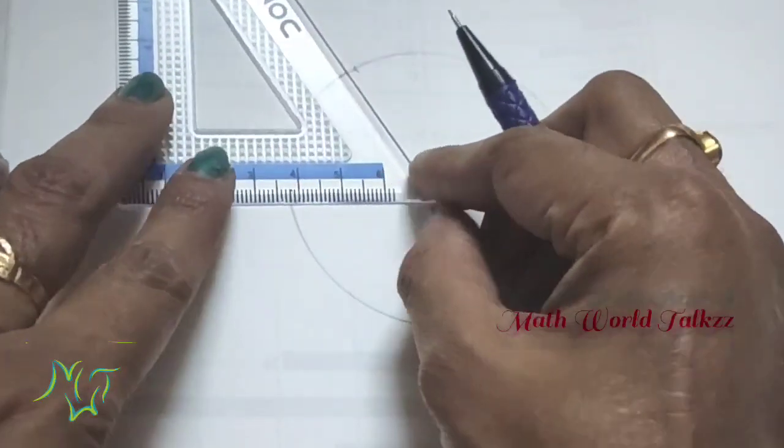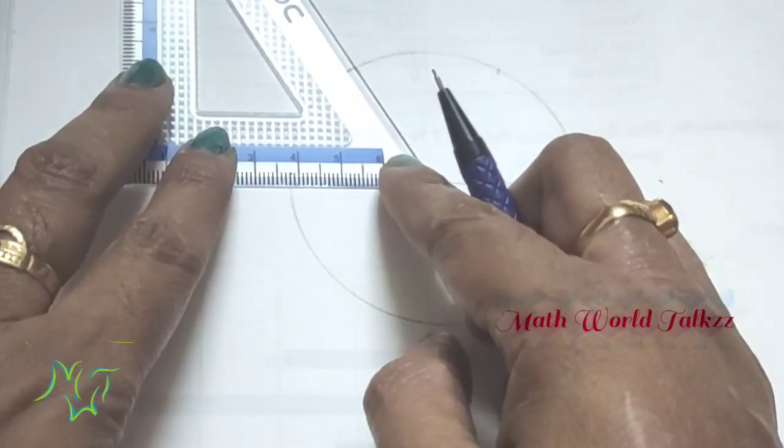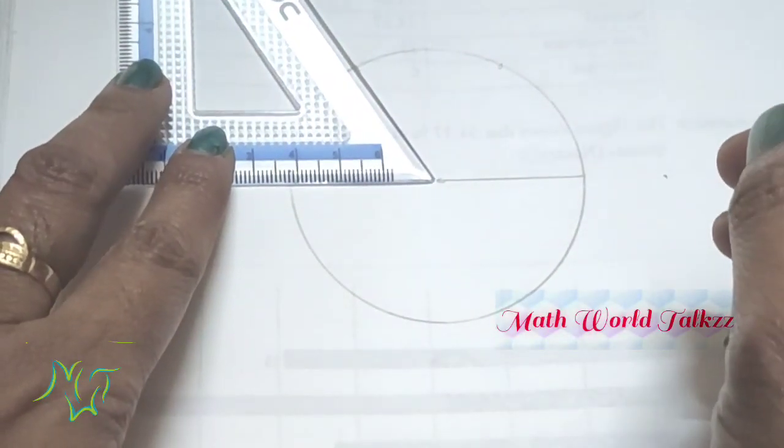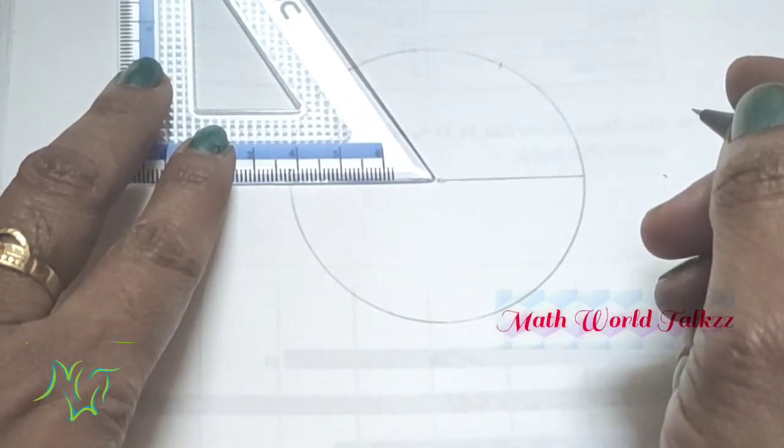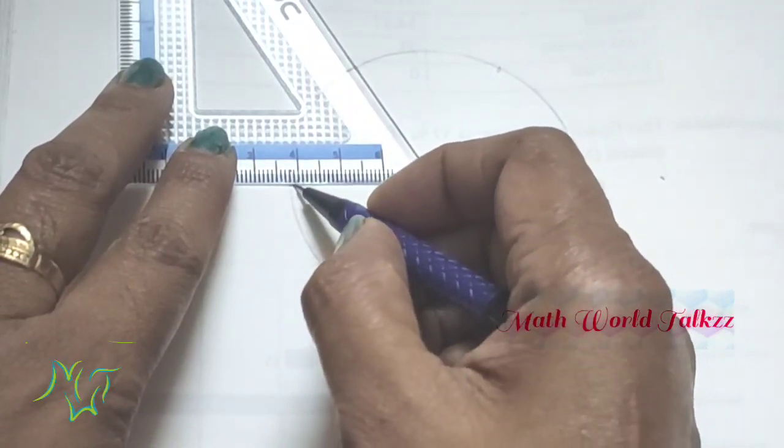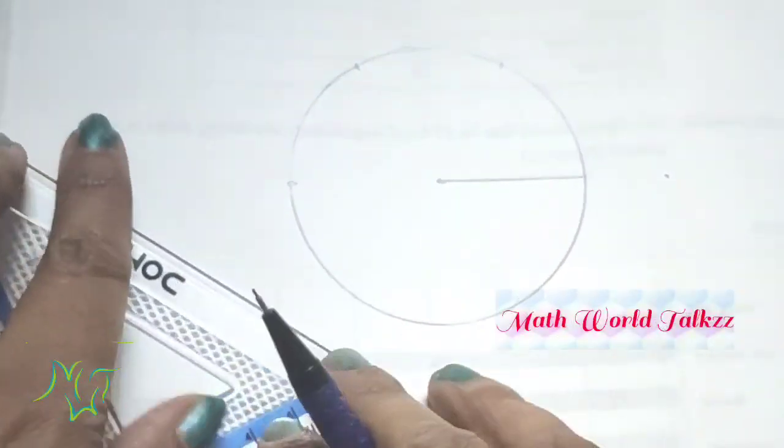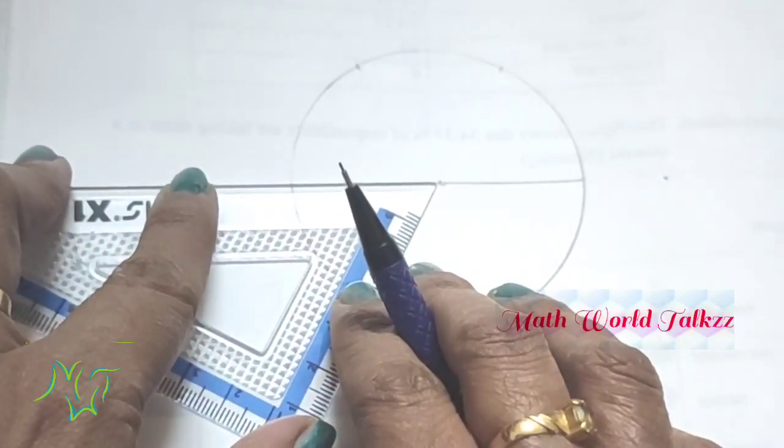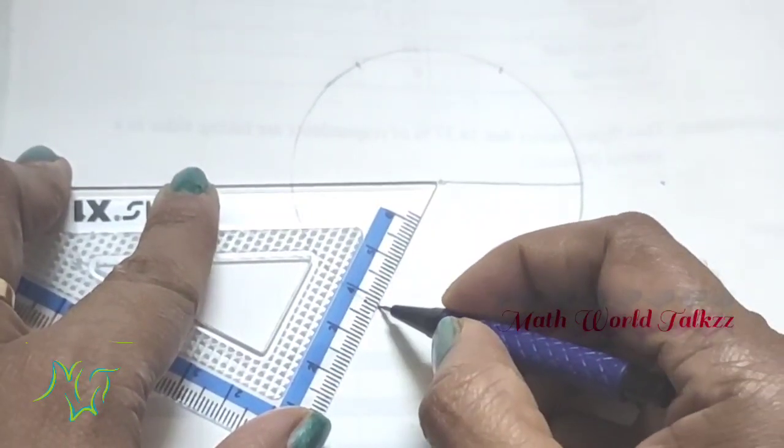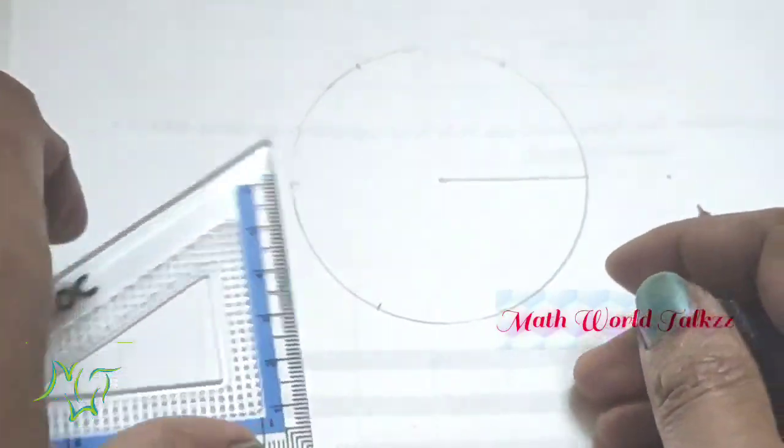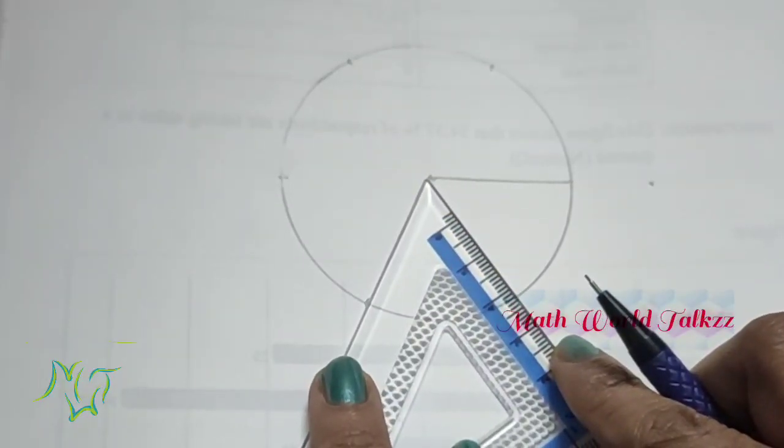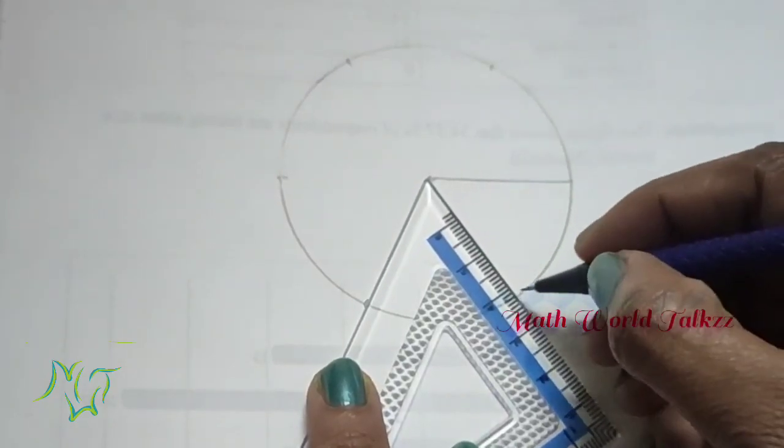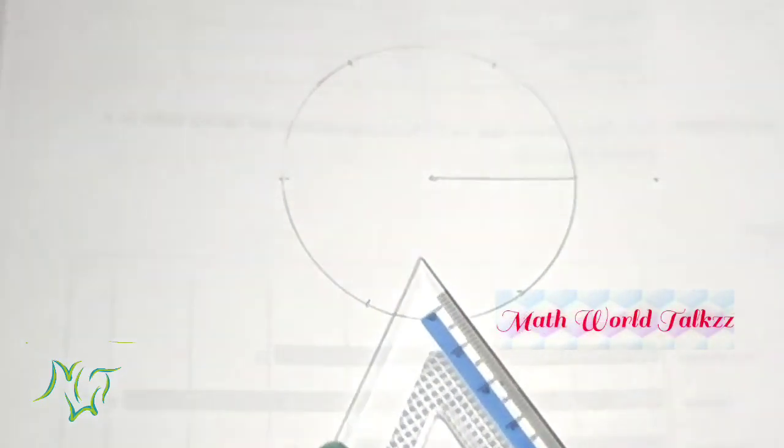Again, keep the set square. Mark a point here, mark a point here, mark a point here, mark a point here. Now we got one, two, three, four, five, six equal parts.